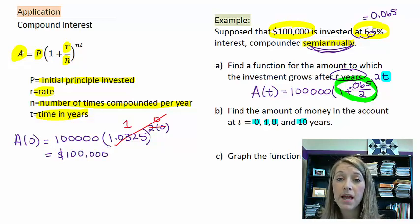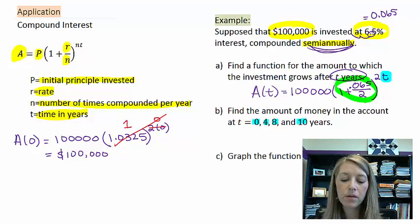Which if you think about it, it makes sense. If my initial investment is $100,000 and my time is zero, meaning it's at the very start of my program, the amount that I should have is $100,000.